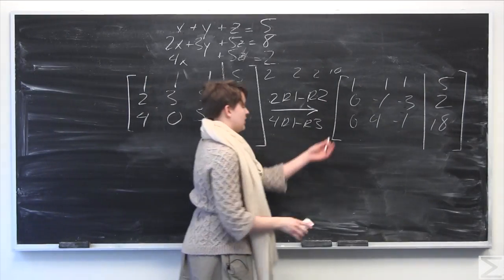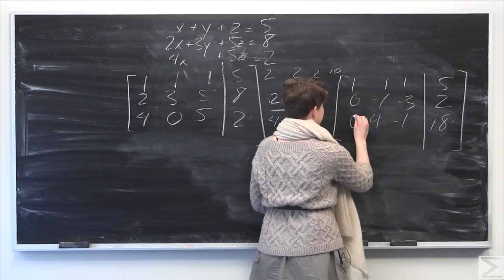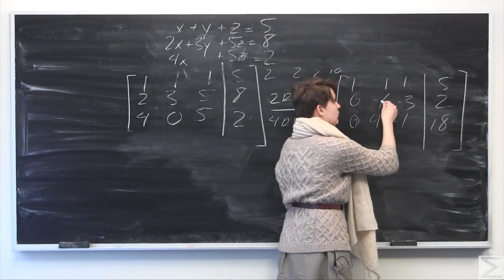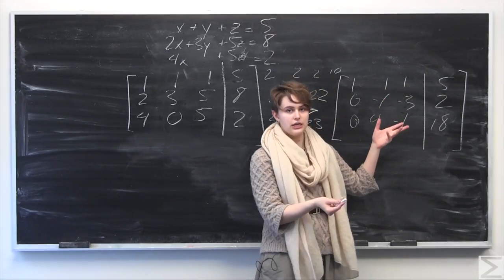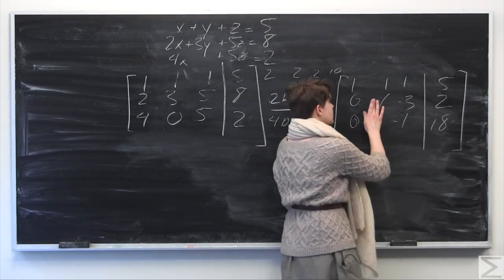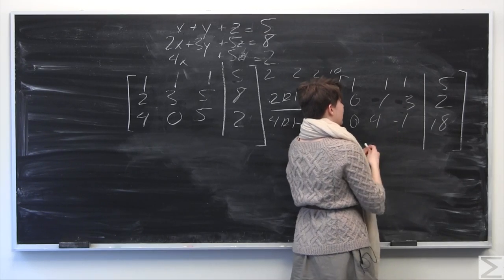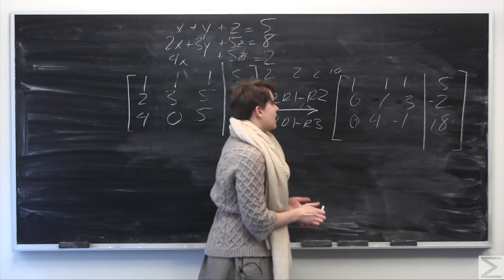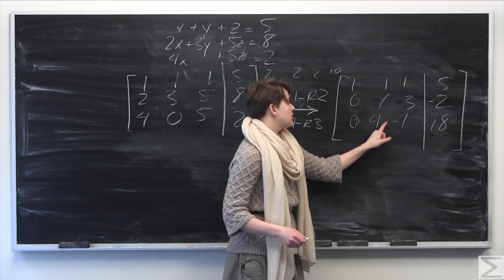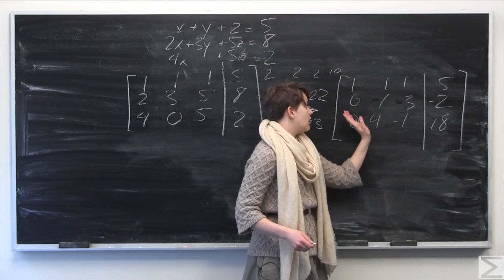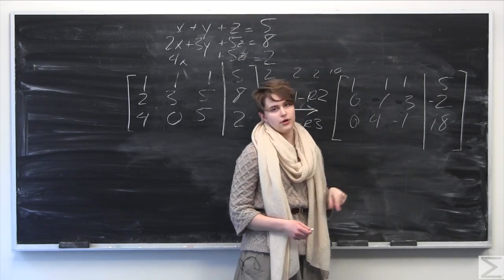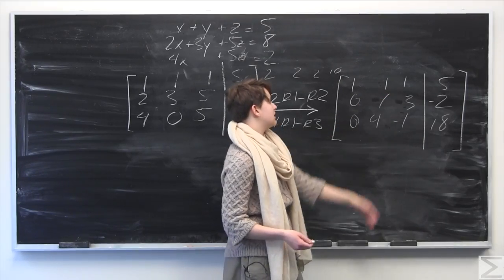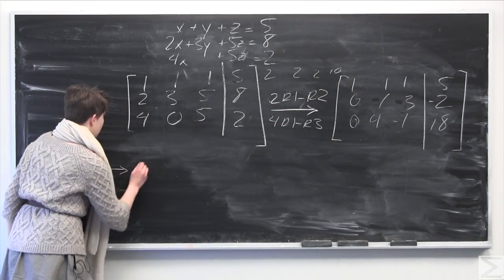Now we've cleared out the first column and we need to repeat the same procedure for the second column. The leading entry in the second row has a negative sign in front of it, so we're going to need to multiply the entire second row by negative one — switching the signs. We had negative one, negative three, negative two, which now become positive one, positive three, and positive two. We need to clear out the four in the third row's second column, since we have a leading one there.